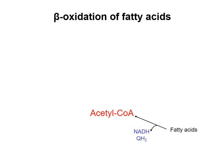Many tissues, including liver and muscle, readily take up fatty acids from the bloodstream into the cytosol. But rather than degrade fatty acids in the cytosol, it's better to produce acetyl-CoA and NADH in the mitochondrial matrix, where they can feed directly into the citric acid cycle and electron transport chain.